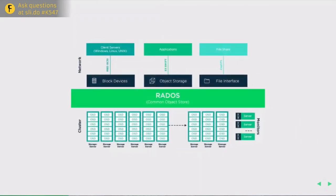The core of the cluster is the RADOS object store, consisting of nodes with OSD daemons running, each OSD mapping to a device. Monitor servers are used by the OSDs to synchronize. Above that, you have nodes providing interfaces to the cluster, and then clients — machines accessing block storage, applications accessing object storage, or nodes mounting CephFS as a file system.